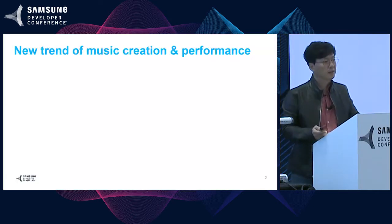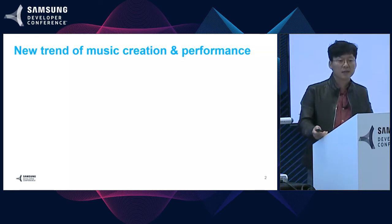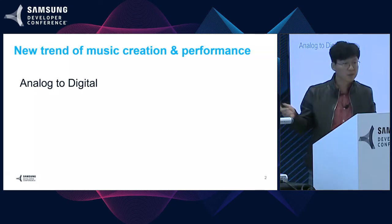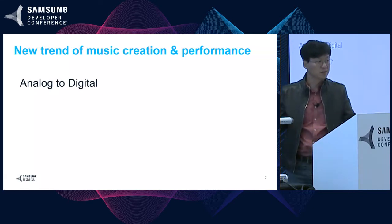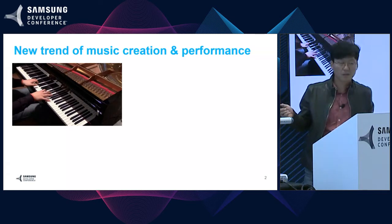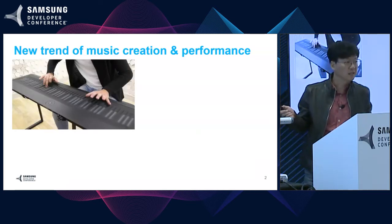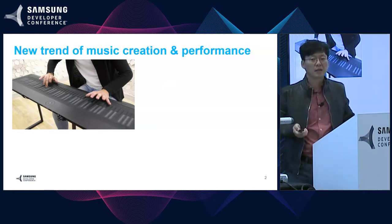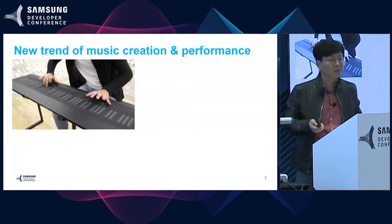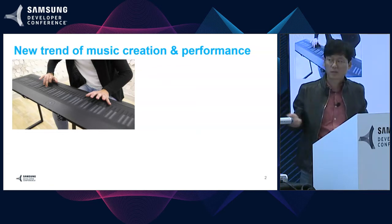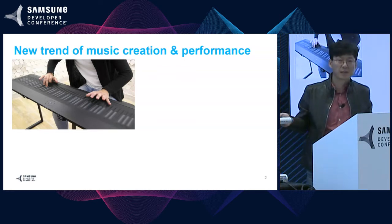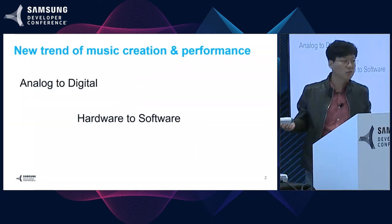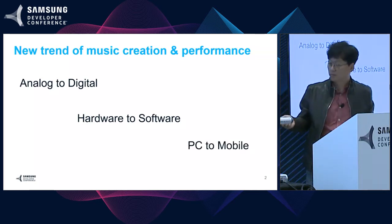Actually, there was no big change in music instruments for a long time. But recently, there are some important changes happening at once. The first is analog to digital — for example, the Grand Piano is replaced by the synthesized keyboard. To get more diverse and complex sound, the synthesized keyboard is naturally accepted. The second is hardware to software. The last one is PC to mobile.